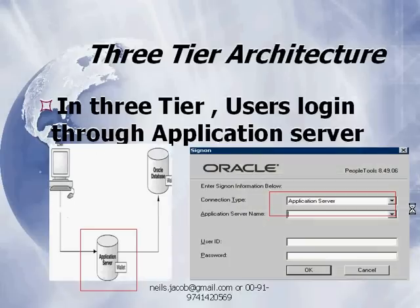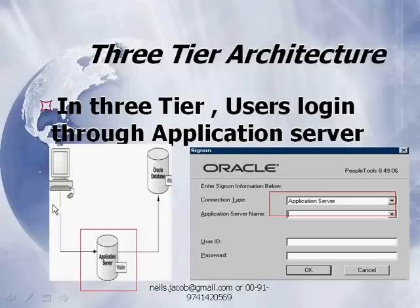Next comes the three-tier architecture. As we can see, an application server has been added, which makes it go from two-tier to three-tier. In our earlier slide we had only the Oracle database and the client, but now it is getting routed through the application server. The question arises: how do we know we are accessing PeopleSoft by three-tier architecture?